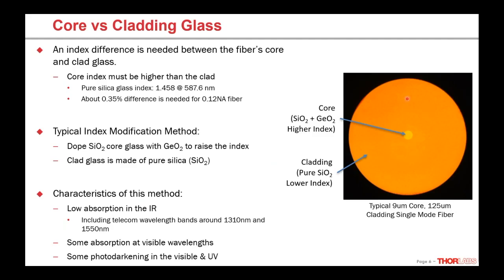You can see that in this cross-section microscope image of a single-mode fiber with a small core and a large cladding — the core has the germanium doping so it is a little bit higher index and therefore we have light being guided in the core. This method is really common; it's used for most telecom fibers in submarine cables between continents. You get really low absorption in the telecom wavelength bands in the near IR around 1310 and 1550 nm.